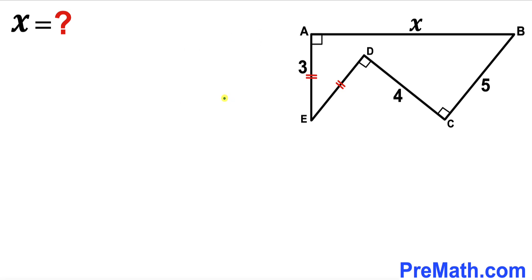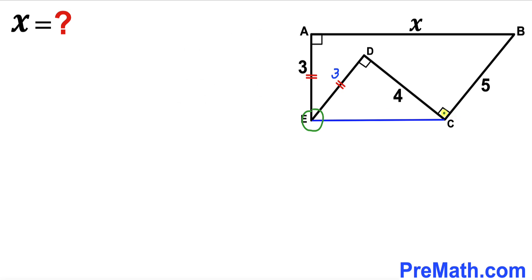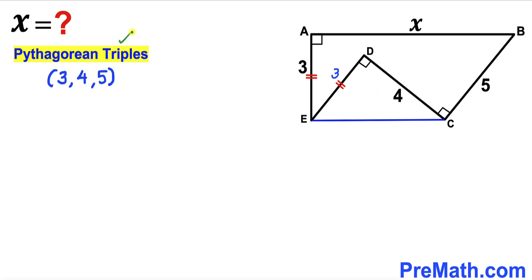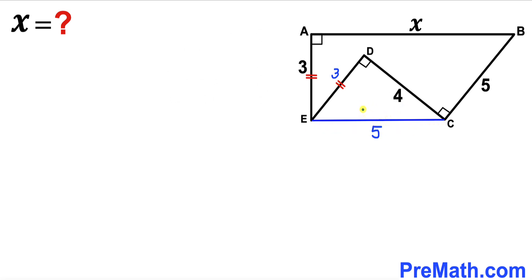In our very first step, since side length AE is 3 units, side length DE is also 3 units. If we connect points C and E, we get right triangle CDE. Recalling the Pythagorean triplet 3, 4, and 5 — since CD is 3 and DE is 4, the hypotenuse CE would be 5 units. However, this strategy is not going to help us.